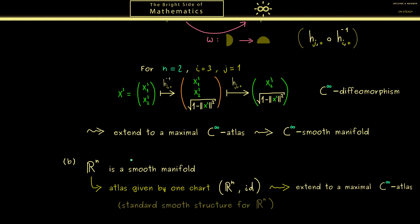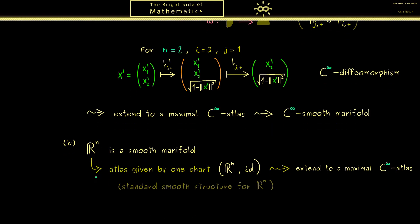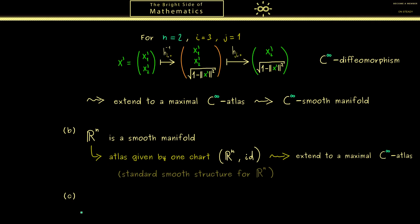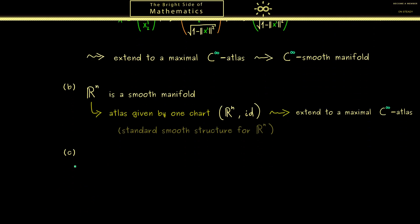Actually, this will be important in the next video when we talk about submanifolds of R^n. Moreover, the next example now already goes in this direction. More precisely, here we consider a continuously differentiable function f. So we say f is an element of C^1 of R.